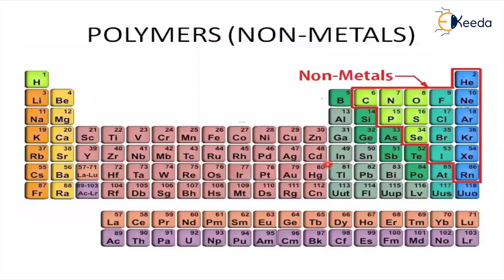Let us discuss polymers. This is the second classification of materials — non-metals, or polymers. Non-metals occupy the right side portion of the periodic table. A non-metal refers to chemical elements which are volatile, insulated to heat and electricity, and lack metallic attributes.